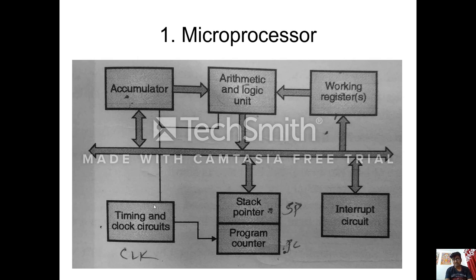After that, accumulator and working registers. These are again used to store the data. For example, if we write a command: move A, comma, hash 02H, that means 02 is going to be stored in register A. In the same way, there are different registers in the microprocessor which are used to store the data.